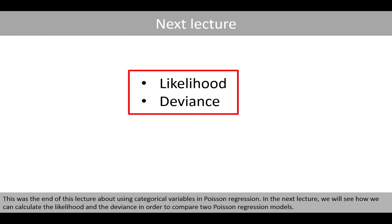This was the end of this lecture about using categorical variables in Poisson regression. In the next lecture, we will see how we can calculate the likelihood and the deviance in order to compare two Poisson regression models.